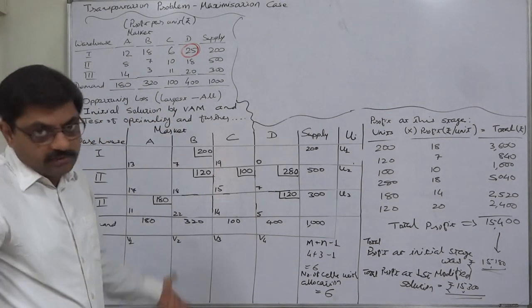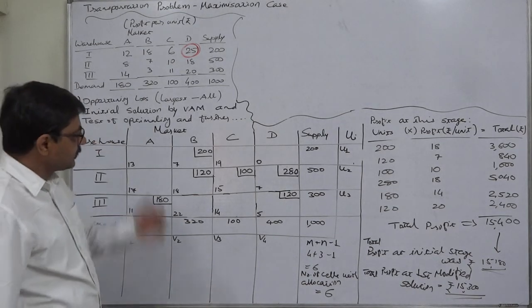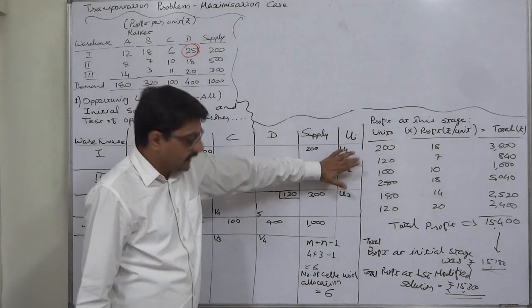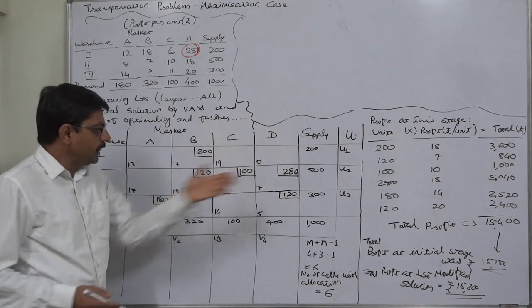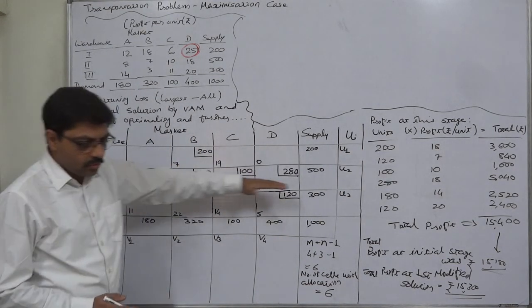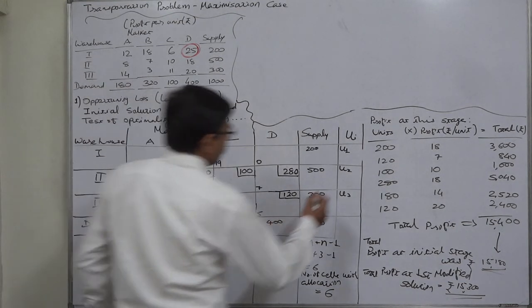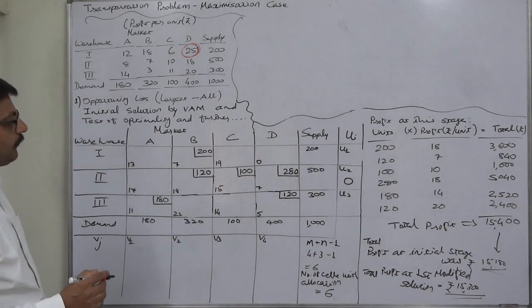But whether this is the final or not, again we have to check the optimality of this solution. And for that purpose we have to write first of all ui and vj values. For that purpose I follow my own suggestion: the row or column with the highest proportion of occupied cells should be allocated 0 as the value of u or v.